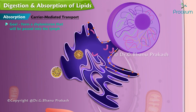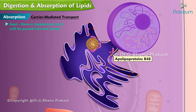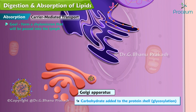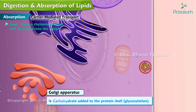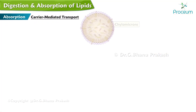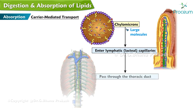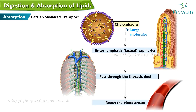Once long-chain fatty acids are inside the enterocyte, they are taken up by chylomicrons in the smooth endoplasmic reticulum, encoded in apolipoprotein B48 that were made in the rough endoplasmic reticulum. These chylomicrons move to the Golgi apparatus to have a carbohydrate added to the protein shell before budding off and entering the interstitial space after fusing with the basolateral membrane. Chylomicrons are large molecules, so they enter lymphatic capillaries, pass through the thoracic duct, and reach the bloodstream. This is ultimately the fate of large-chain fatty acids and cholesterols digested in the gastrointestinal tract.